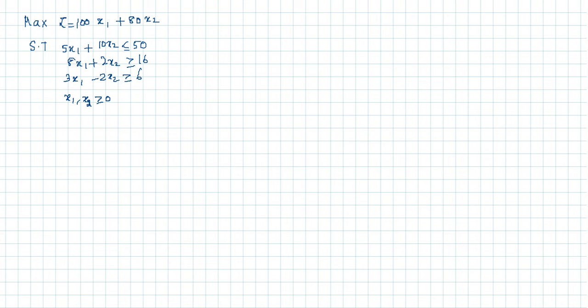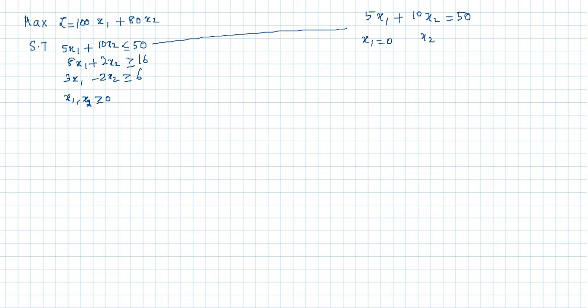So the same procedure we can apply as in the previous tutorial. First, take the first constraint and convert it to an equality: 5x1 + 10x2 = 50. On applying x1 = 0 you get x2 = 5. On applying x2 = 0 you get x1 = 10. So the intercept points are (0, 5) and (10, 0).